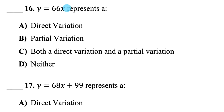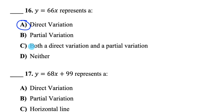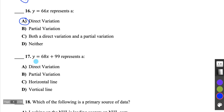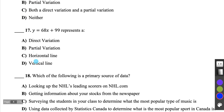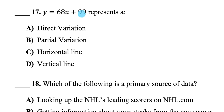Question 16: y equals 66x represents a direct variation, because it's a linear relationship and y and x vary directly — there's no constant added. Question 17, on the other hand, has a constant added after the x term, therefore it's a partial variation.